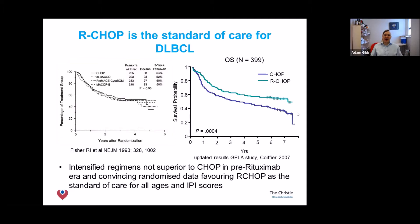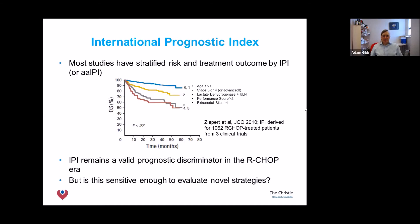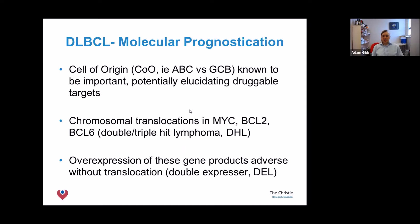Not everybody performs equally well with R-CHOP. We attribute patients a risk score according to age, stage, blood test results, and how unwell they feel. With low-risk disease, 80 to 90 percent of people do very well with R-CHOP. But with high-risk disease, up to 50 percent of people sadly experience a relapse. Doctors have been investigating why this is, with theories relating to the cells from which the lymphoma derives.